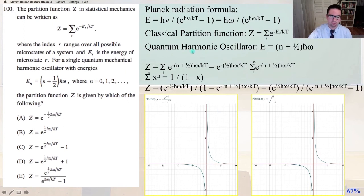So from Planck's radiation formula, very famous formula, I'm sure you know it. E equals, and so we're going to convert it to w. So e equals ℏω divided by the quantity e to the ℏω divided by kt, that quantity minus 1. And the classical partition function as given in the problem, and so the quantum harmonic oscillator, again, given in the problem.